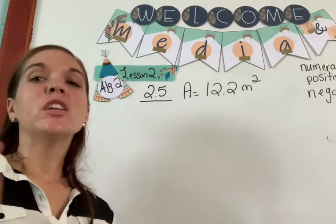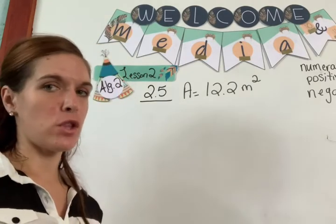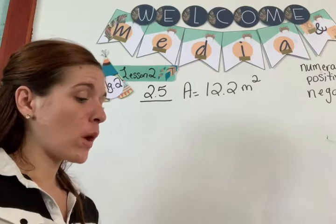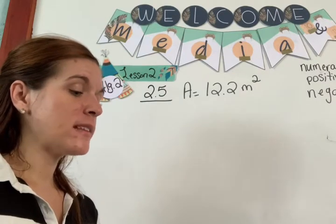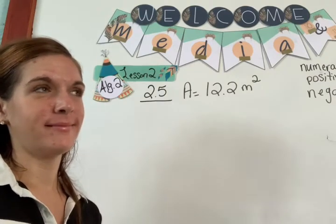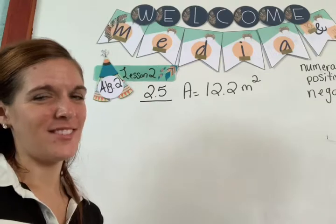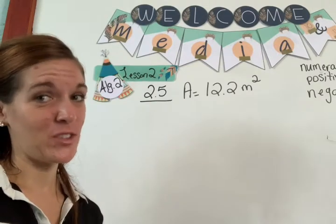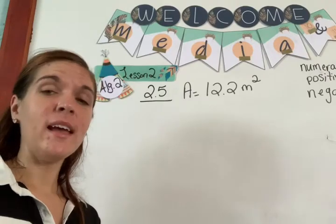Look at example 2.5. We're talking about circle relationships. The area of a circle is 12.2 meters squared. What is the approximate circumference of the circle? Do you know where to start? Maybe, right?